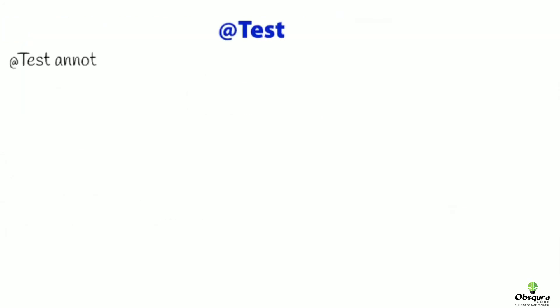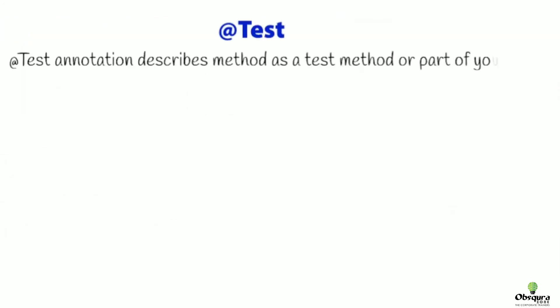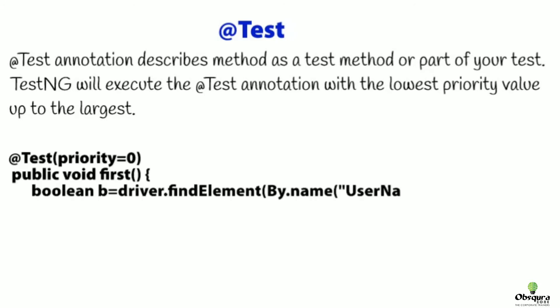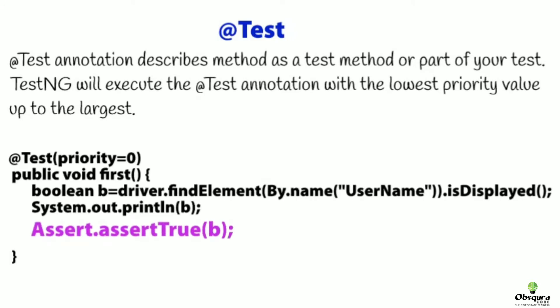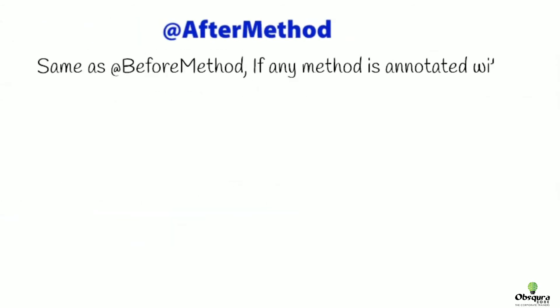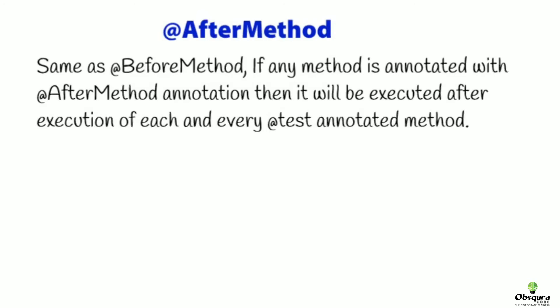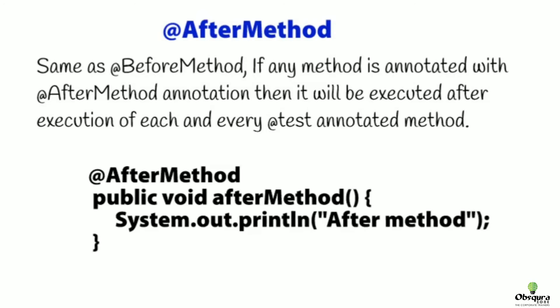Next, @Test: this annotation describes a method as a test method or part of your test. TestNG will execute @Test annotations with the lowest priority value up to the largest. There is no need for priority values to be consecutive. Every assertion will take place only in the @Test method. Next, @AfterMethod: if any method is annotated with @AfterMethod, then it will be executed after execution of each and every @Test annotated method.